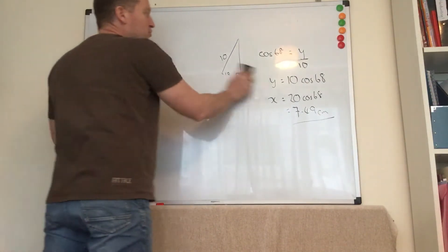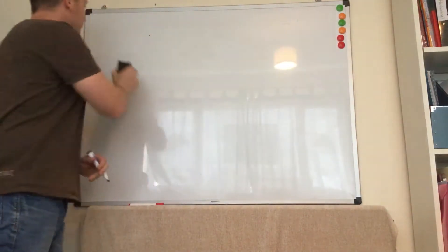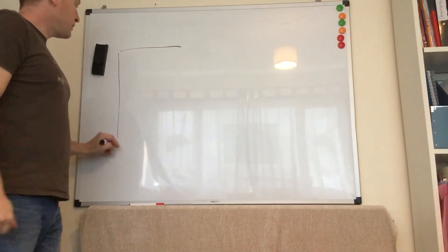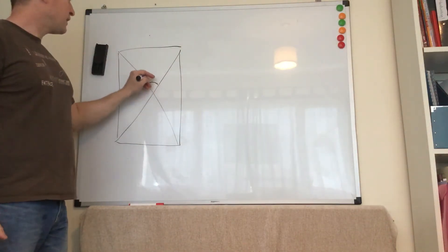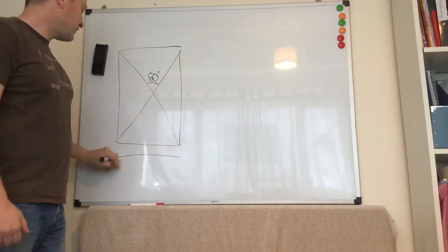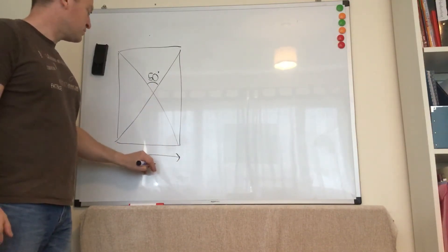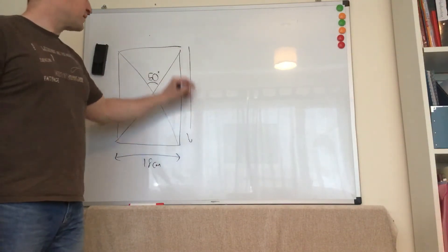Second question confused me for a while, but only because I think I was being silly with it. We get a rectangle with the two diagonals, and in this case this angle's 50, and that's 18 centimeters, which was nice. It was an odd number before. And we have to work out the length of a rectangle, x.